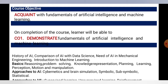The key points of this subject are: the history of AI, comparison of AI with data science, need of AI in mechanical engineering, introduction to machine learning, and the basic topics of reasoning, problem solving, knowledge representation, planning, learning, perception, motion and manipulation. There are also various approaches to AI including cybernetics and brain simulation, symbolic and sub-symbolic, and statistical approaches — all of which we will learn in upcoming slides.